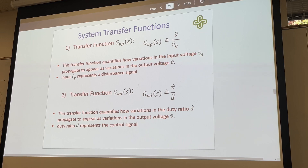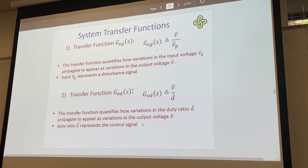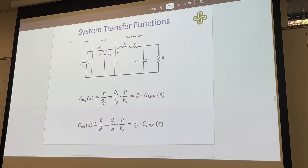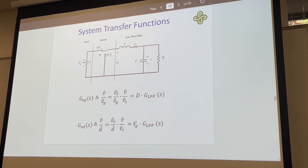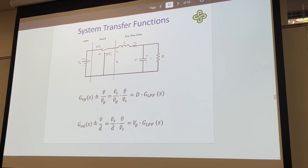We have our transfer function VDS, which is the transfer function quantifying how variations in the duty ratio propagate out to appear as variations in the output voltage, where D-hat represents the control signal. We break this into the system transfer functions. The VG transfer function is the steady state duty cycle times the gain of the low-pass filter transfer function. You can see it broken down as variations in the input times small variations in the output over small variations in the square wave — these cancel out, leaving us with output over input.